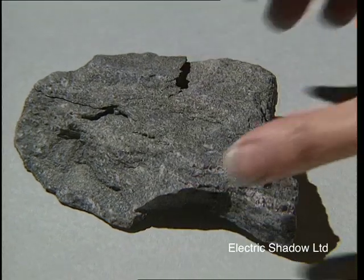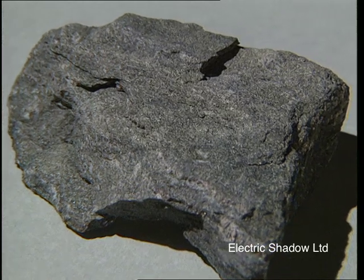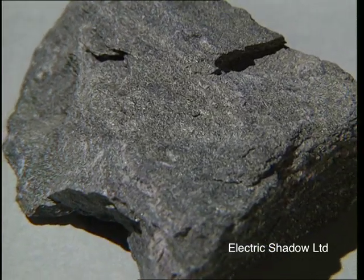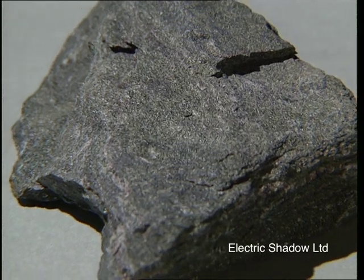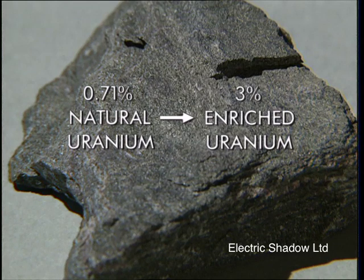Natural uranium requires processing before it can be used as fuel for the reactor. This is because it does not contain a high enough percentage of U-235 to sustain a chain reaction. This level of U-235 needs to be increased to about 3% by a process known as enrichment.